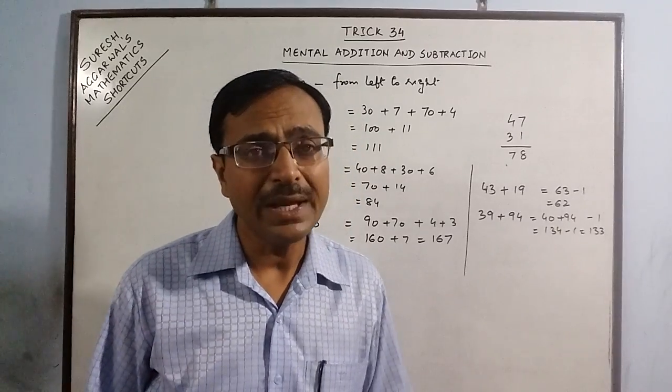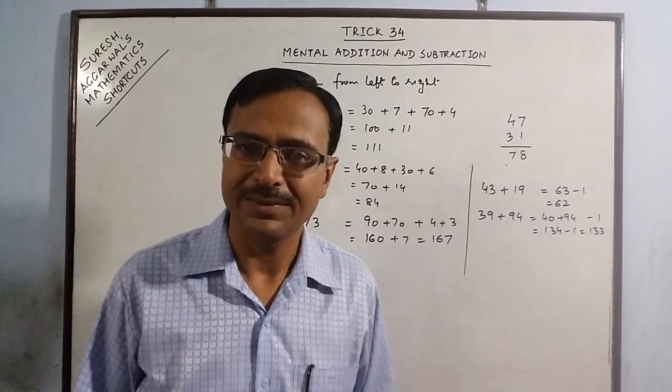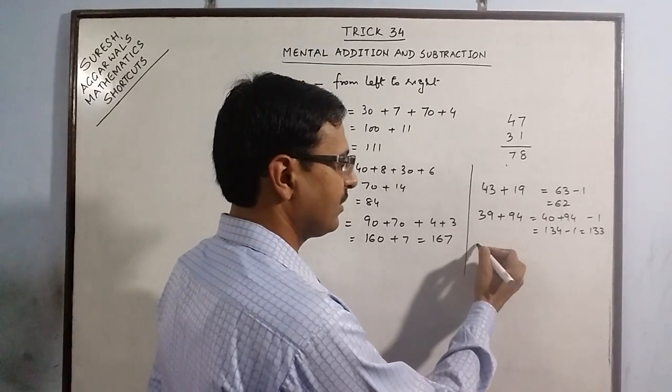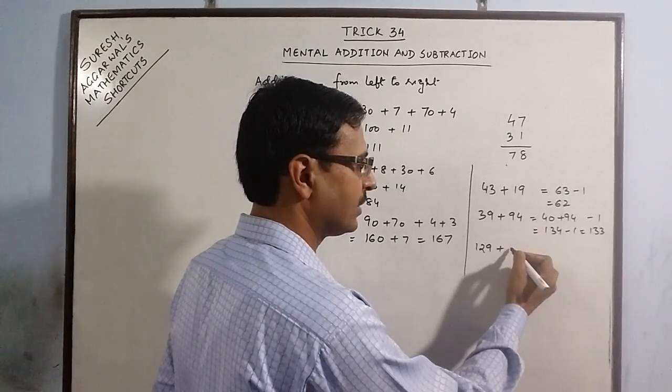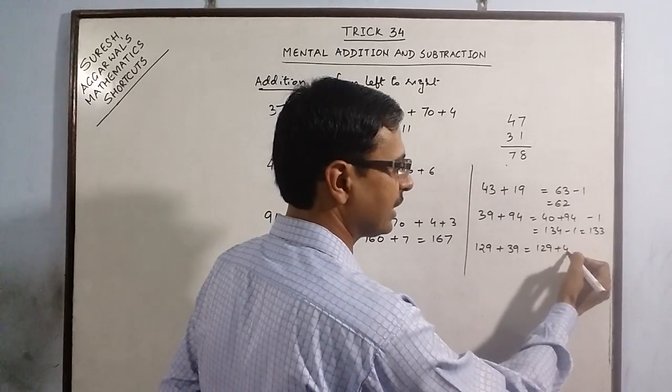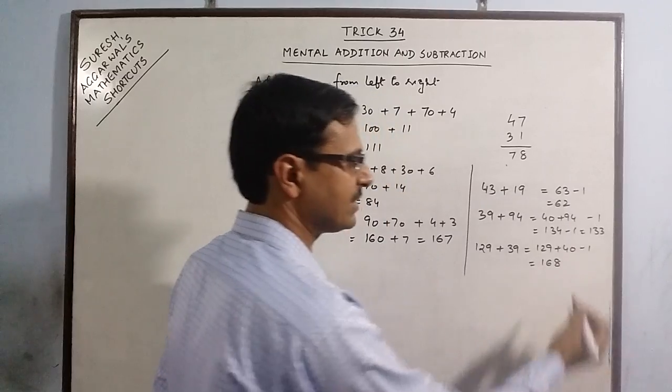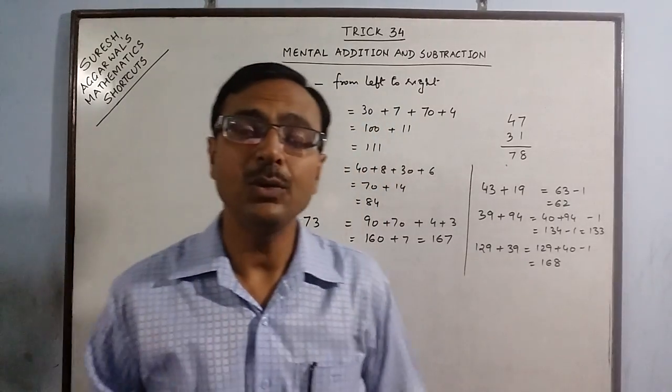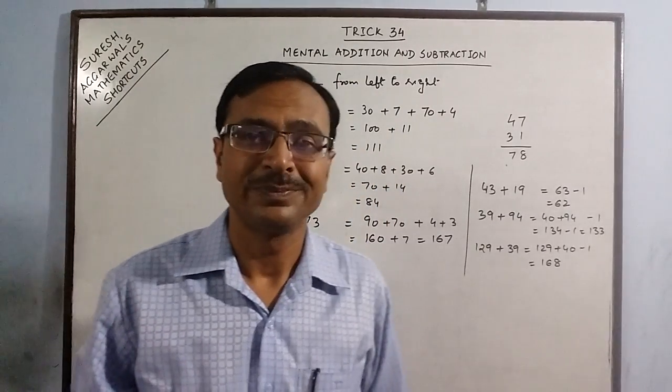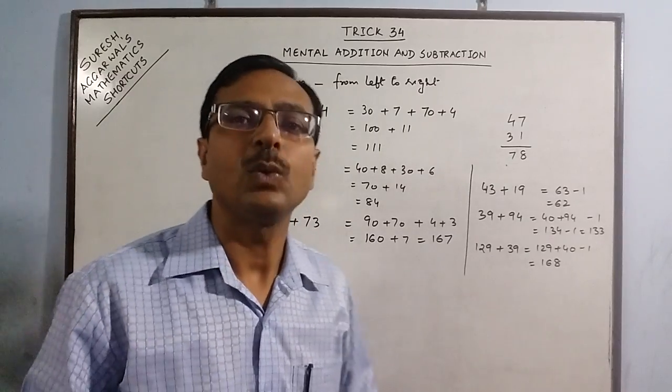So if you think like this, calculations will be far more easier. One more example: say 129 plus 39. So 129 plus 40 = 169 minus 1 = 168. And you will not be making mistakes also. A lot of problems will be solved if you think of calculations in this way.